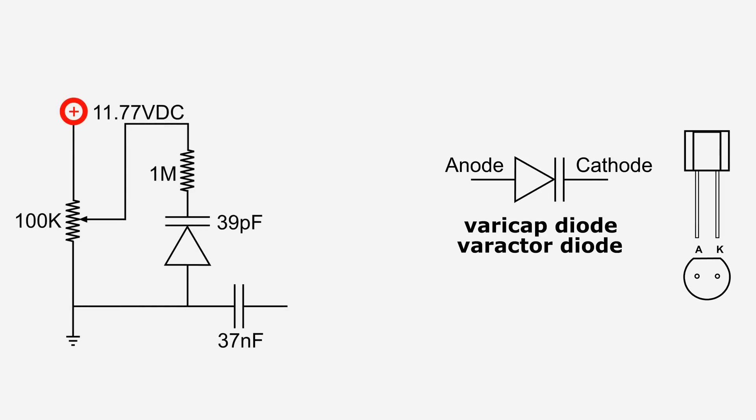This is the test circuit that I came up with to see what a varactor diode does. All the way on the left we have a 100k ohm variable resistor, and the center of that resistor